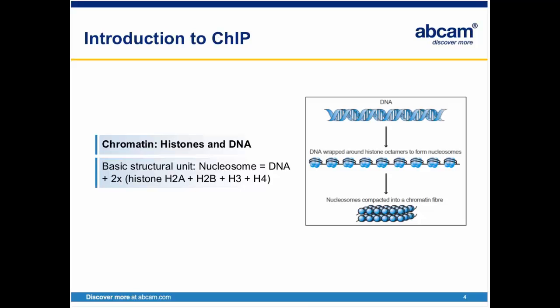The linker histone, H1, does not form part of the nucleosome itself, but it seems to act as a stabilizer of the internucleosomal DNA. The primary functions of chromatin are to package DNA into a smaller volume so that it fits in the cell, to strengthen the DNA to allow mitosis and meiosis and prevent chromosome breakage, and to control gene expression and DNA replication.